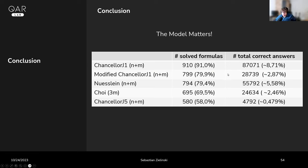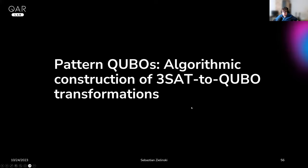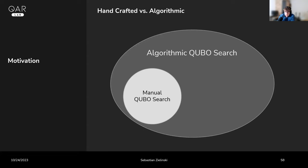So what can we conclude from this first paper? The model matters — there are quite significant differences between transformations. We need to be careful which model we choose. We've seen that the number of different quadratic values and the size of the quadratic value range seem to impact solution quality. Now that we've understood the choice of QUBO model matters, we are no longer happy with how we manually create these QUBO transformations, which requires expert knowledge and significant time investment.